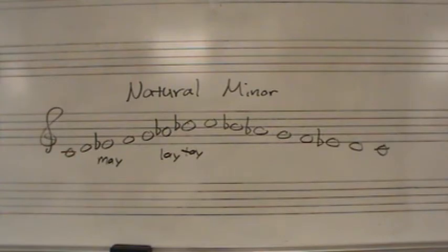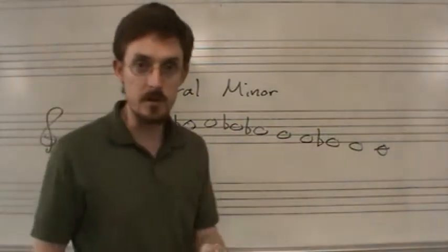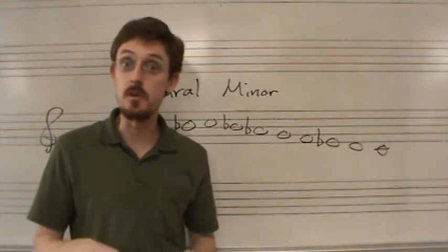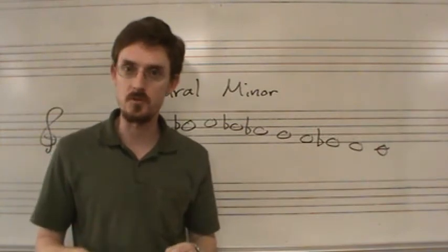Do, re, me, fa, so, le, te, do, te, le, so, fa, me, re, do. All right. Again, if you're just learning this for the first time, repeat this as many times as you need to until you feel confident that you know the natural minor scale.